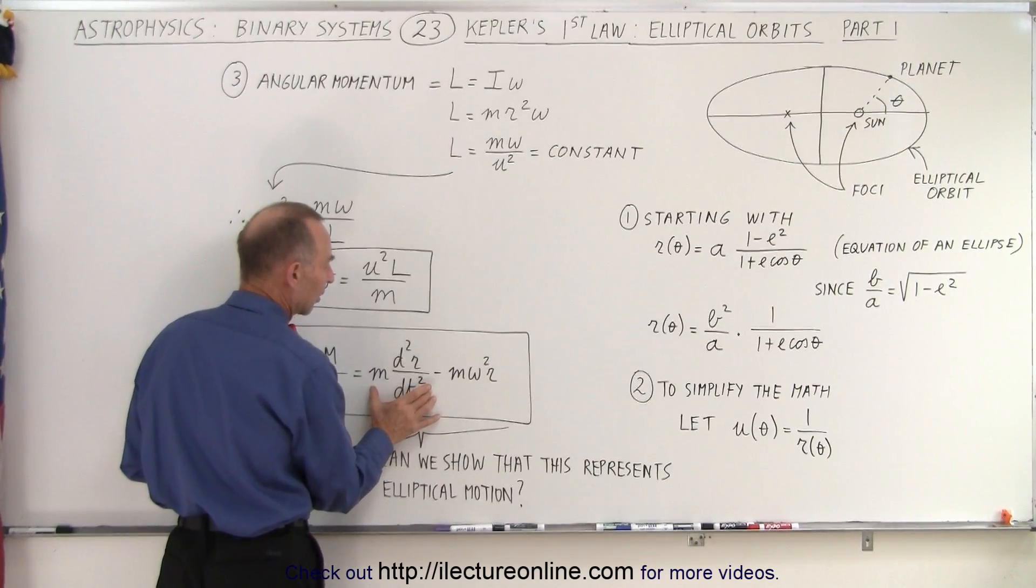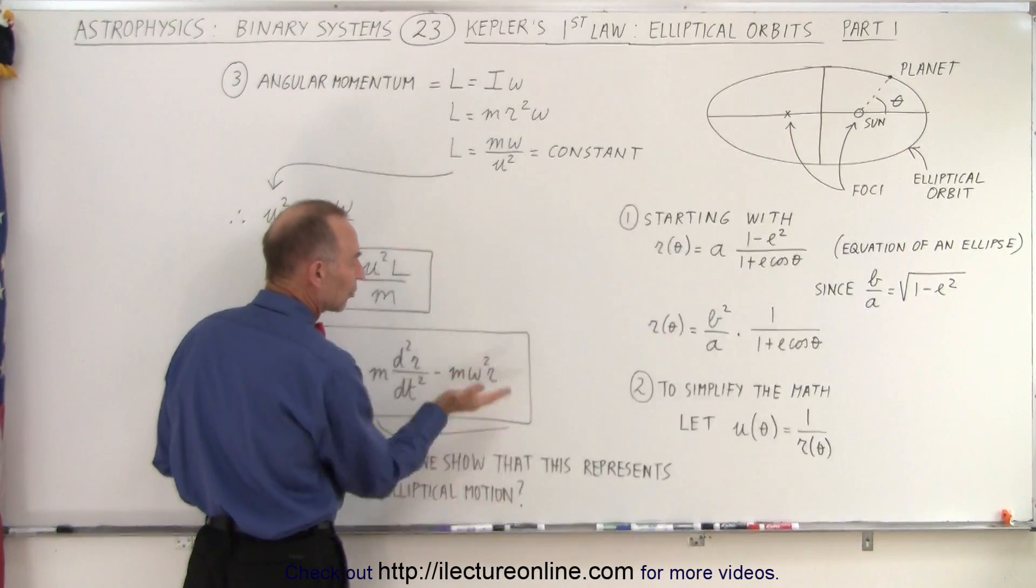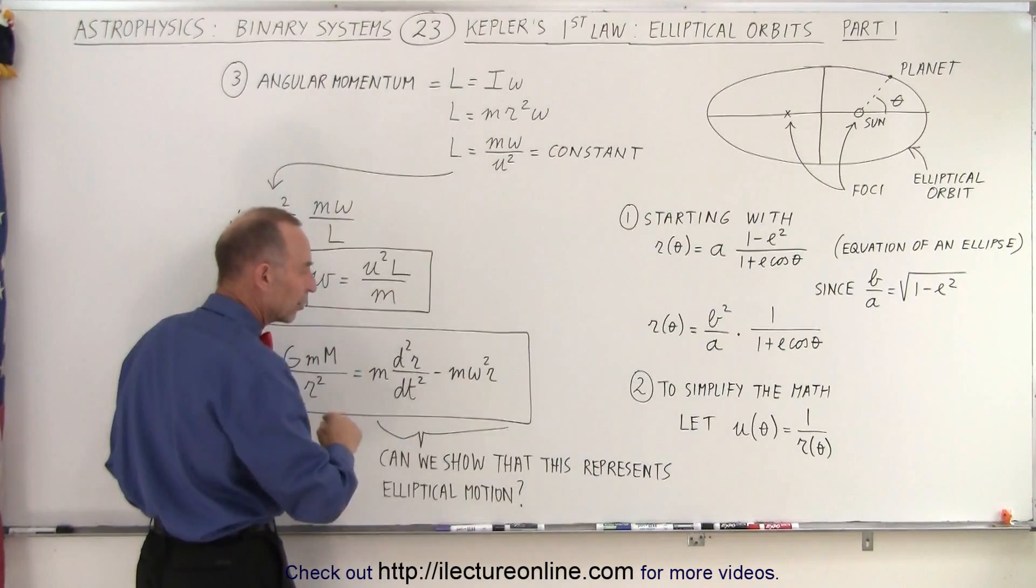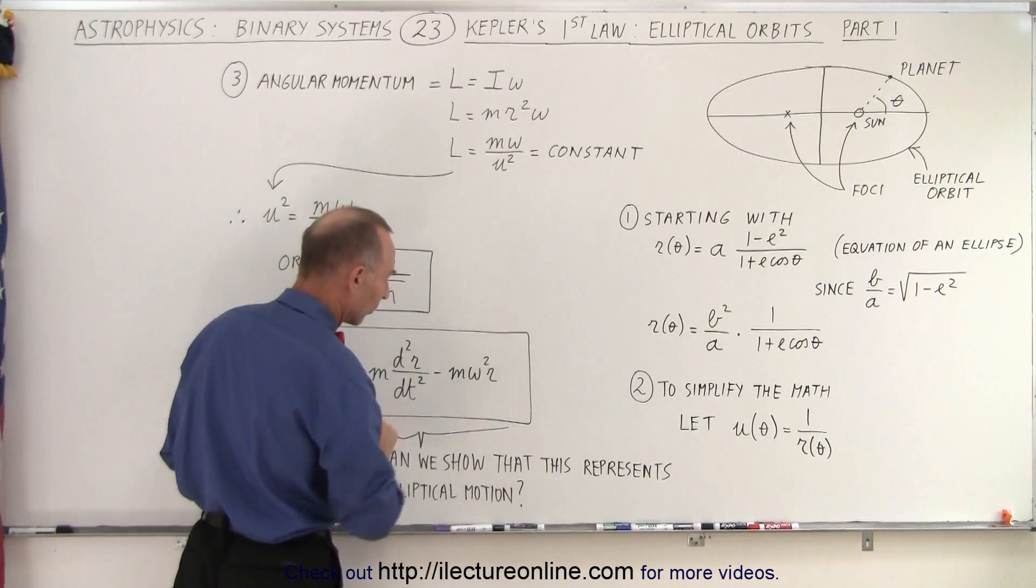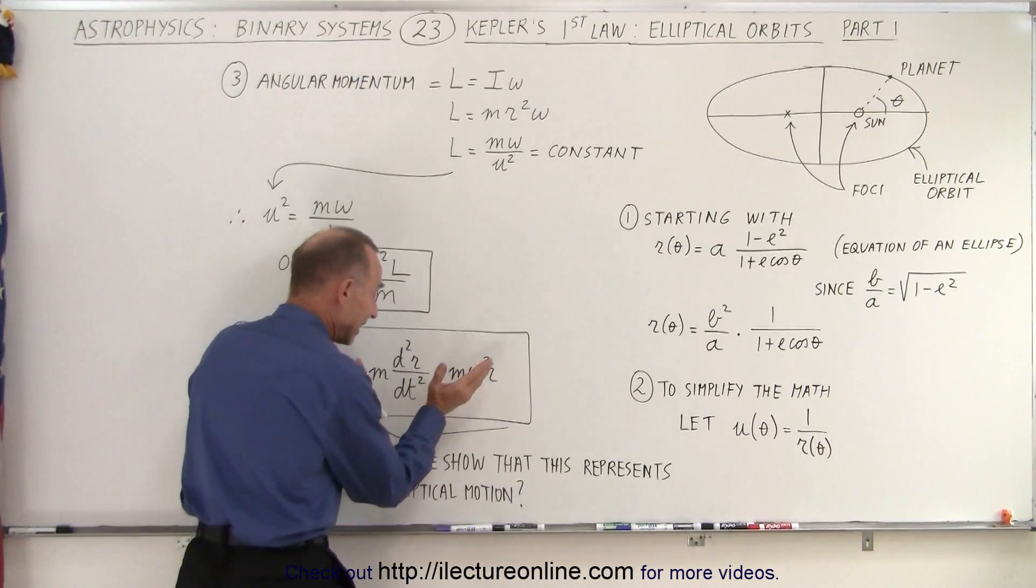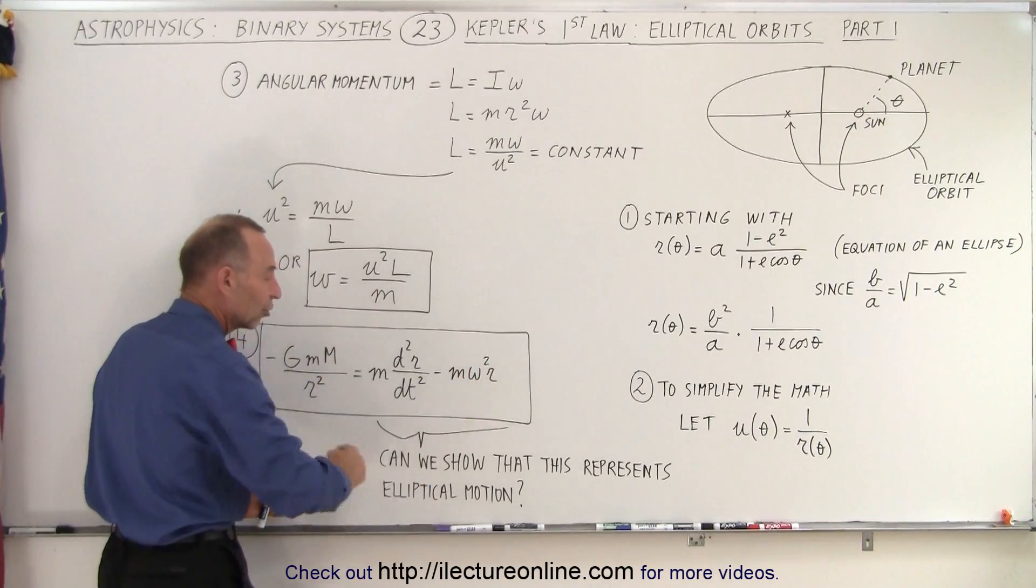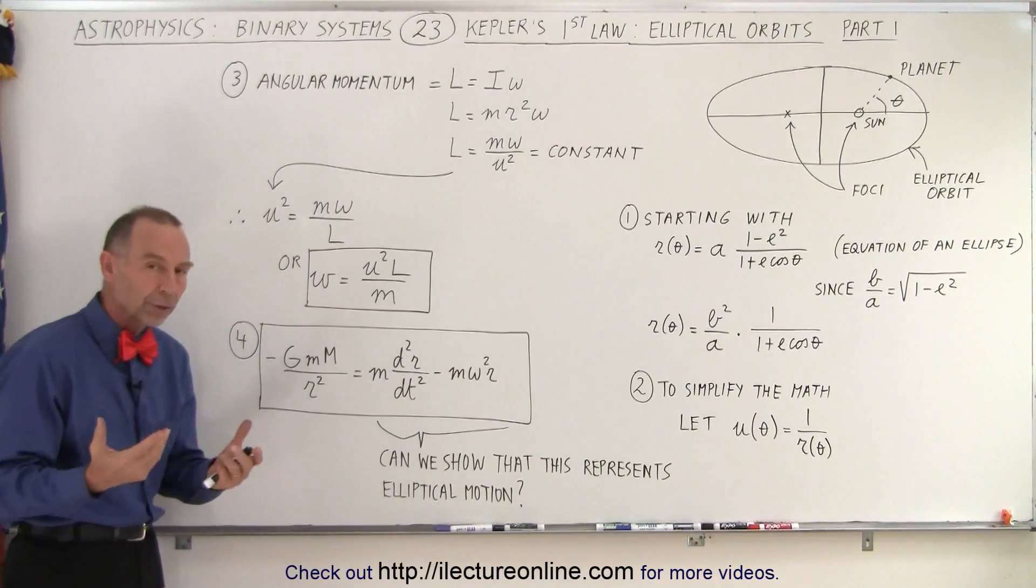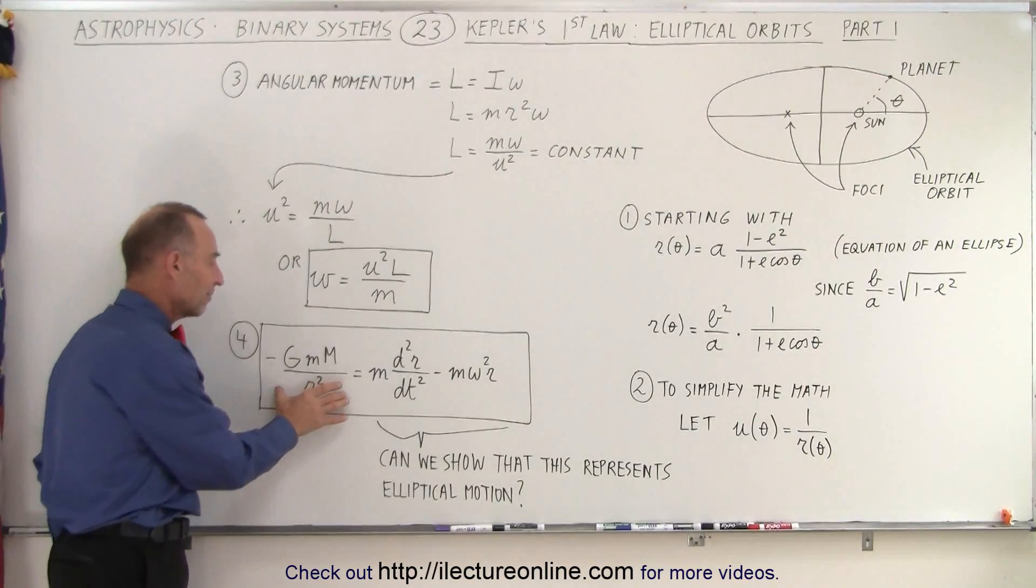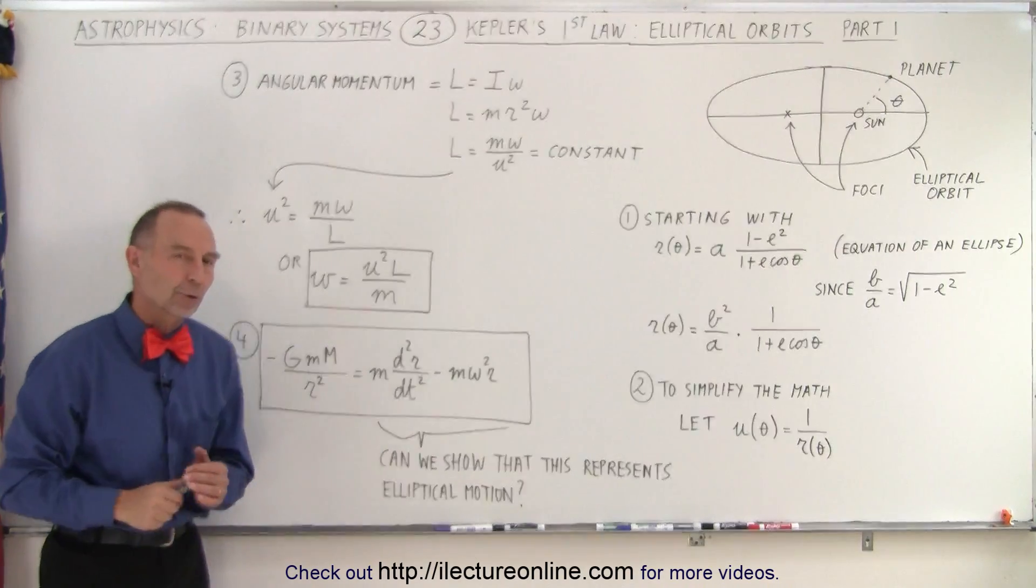We have the radial acceleration and the angular acceleration. The planet constantly increases and decreases its speed as it goes around the sun. Our objective now is to show that the right side of this equation represents elliptical motion, that the orbit is indeed an ellipse. We're going to show that the equation of gravity leads to an elliptical orbital path for the planet.